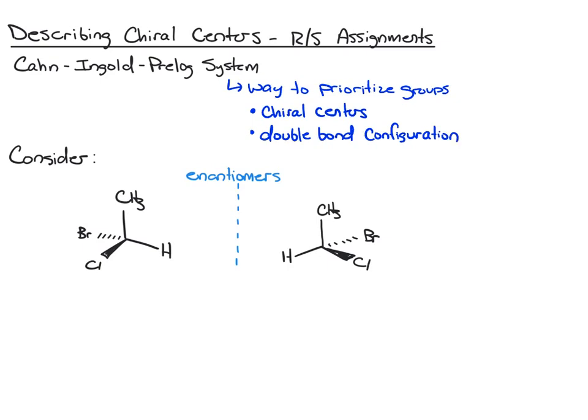So consider the two enantiomers I have drawn below. We have our mirror plane right here — one enantiomer on the left and one enantiomer on the right. You know how to do IUPAC naming for basic molecules, and without letting the three-dimensionality of this throw you off, our parent chain here is ethane.